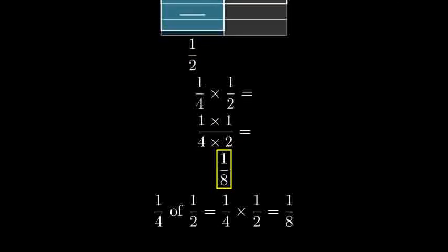So, we can see that finding one-fourth of one-half is the same as multiplying one-fourth times one-half, which equals one-eighth.